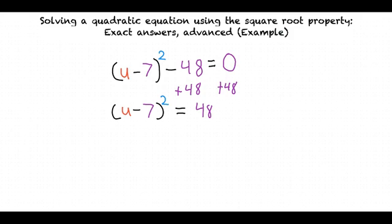The next step will be to get rid of the square that surrounds u minus 7. We do that by square rooting both sides, which will get us the result of u minus 7 equals plus or minus the square root of 48. You get a plus or minus from the square root based on the square root property.